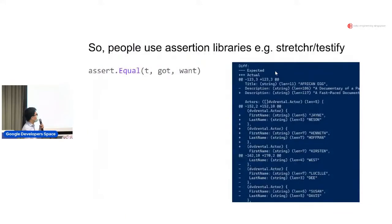So people use assertion libraries like stretchr/testify, and you've got this very nice concise language where you've got assert.Equal, you pass in testing.T, the got and want, and you get a very nice diff out of that. You can see here, expected, what you expected, what the actual stuff that you got.